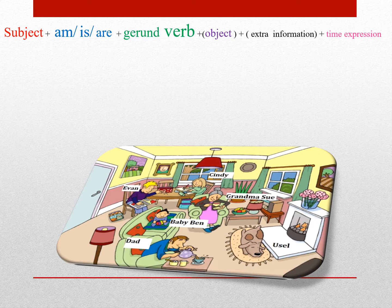و Time Expression که مربوط به Present Continuous هست. اصولاً همین کلماتی که بهتون گفتم: Now، Right Now، At The Moment. اینا همه Time Expression هایی هستن که مربوط به زمان Present Continuous هستن.